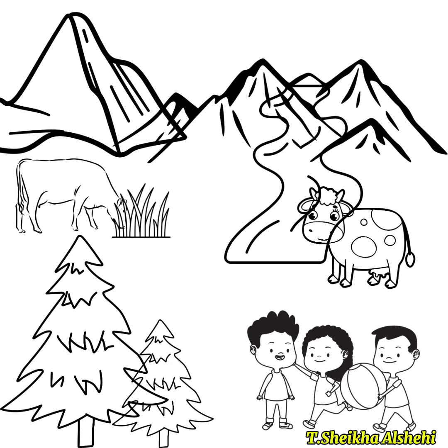There are two big trees. Yes, there are. One tree is taller than the other. Yes. Colour the taller tree green. OK.